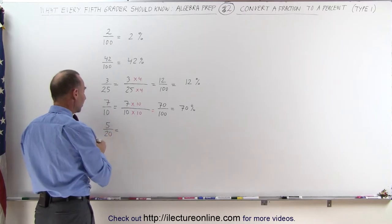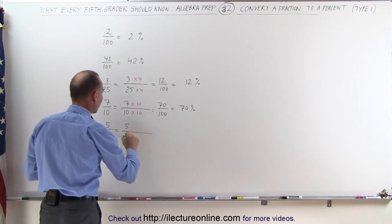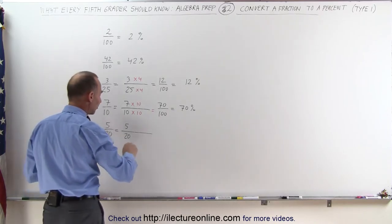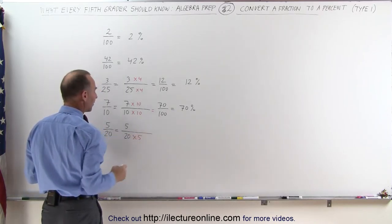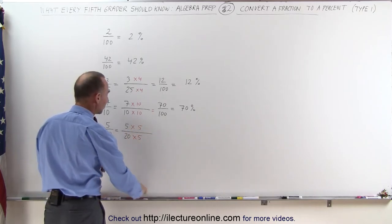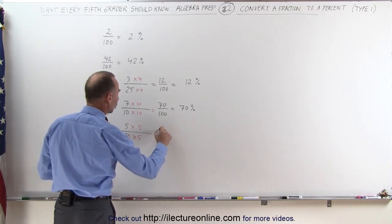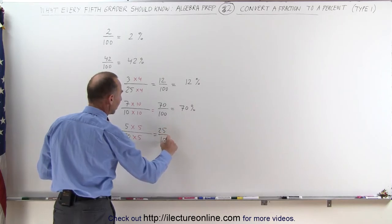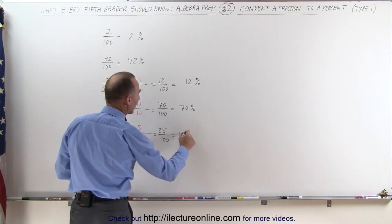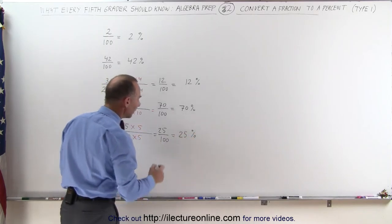Here again, same example, we have 5 divided by 20, and I can see that if I multiply the denominator times 5, 20 times 5 is 100, I multiply the numerator times 5, which means that my new fraction now becomes 25 divided by 100, and that can be written as a percent by simply taking the numerator and putting a percent sign behind it.